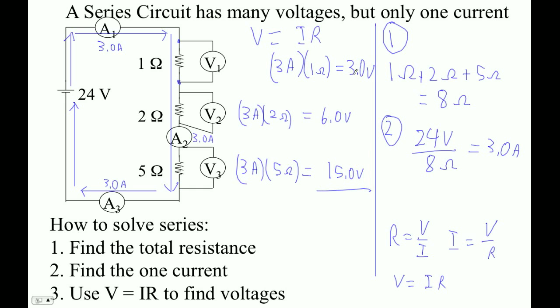And then just notice this. 3 plus 6 is 9 plus 15 is 24 volts. So if you look at all the voltage drops in a circuit, they will equal the total voltage rise, the pressure applied to the circuit. So that's how you do it. Find the total resistance. Just add them up. Find the one current. That's just going to be V divided by R. And then use V equals IR to pick off the voltages.